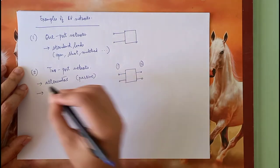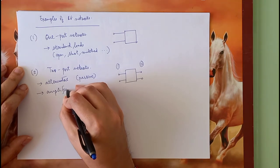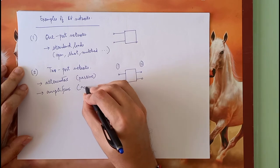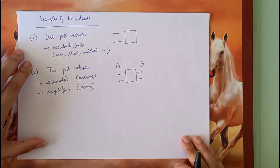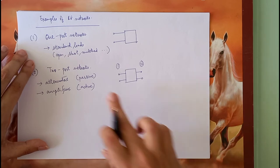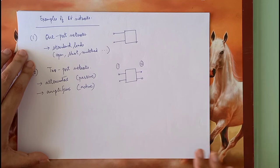The opposite of attenuators is amplification. Amplifiers are the next example of two-port networks, but amplifiers are always active. You cannot have amplification just by having passive devices. Attenuators are basically lossy elements — they use resistors inside to consume some of the signal power, and whatever remains is sent out.